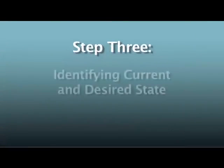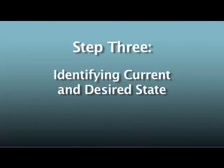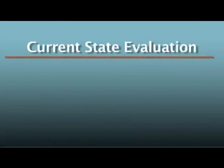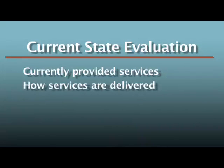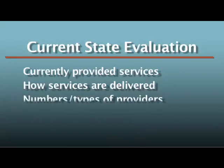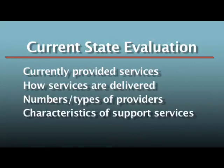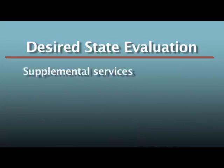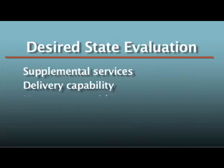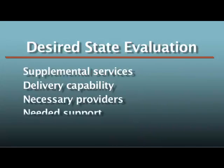Step three: identifying your current and desired state. Your current state evaluation generally focuses on the clinical services your organization currently provides, how the provided services are delivered, the numbers and types of providers, and other characteristics of support services. The desired state evaluation will identify the supplemental services, delivery capability, providers, and other support necessary.